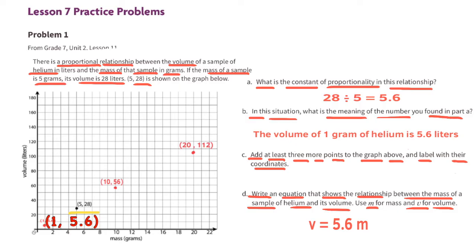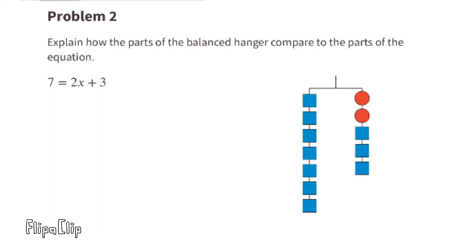Problem number two: Explain how parts of the balanced hanger compare to parts of the equation. The equation is 7 = 2x + 3. The stack of seven blue blocks on the left side of the hanger represents the seven in the equation on the left side of the equal sign.